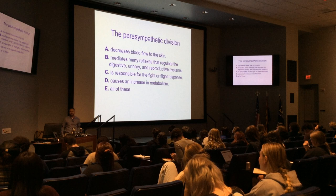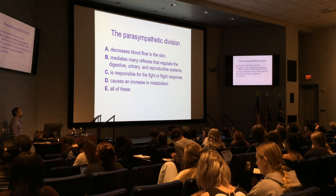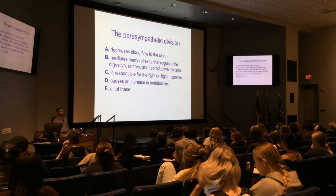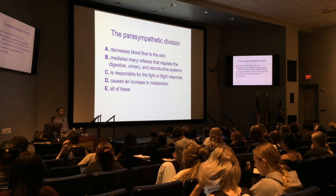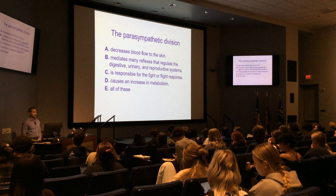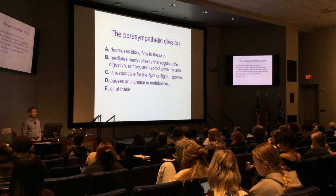Let me pose this question. The parasympathetic division: A, decreases blood flow to the skin; B, mediates many reflexes that regulate digestive, urinary, and reproductive systems; C, fight or flight; D, causes an increase in metabolism; or all of the above. What does the PNS do? The answer is B — mediates many reflexes that regulate digestion, urination, and reproduction. Remember: breed or feed type of responses.